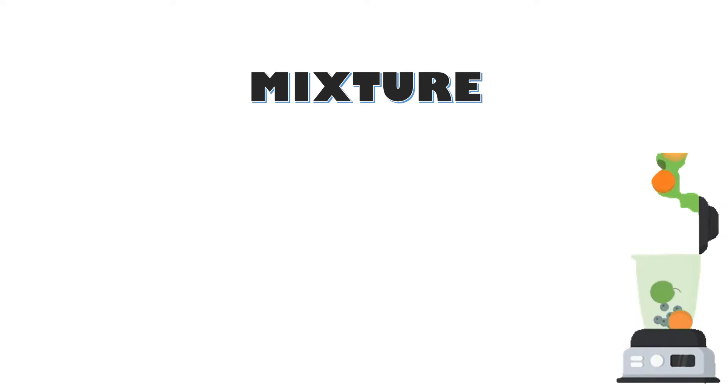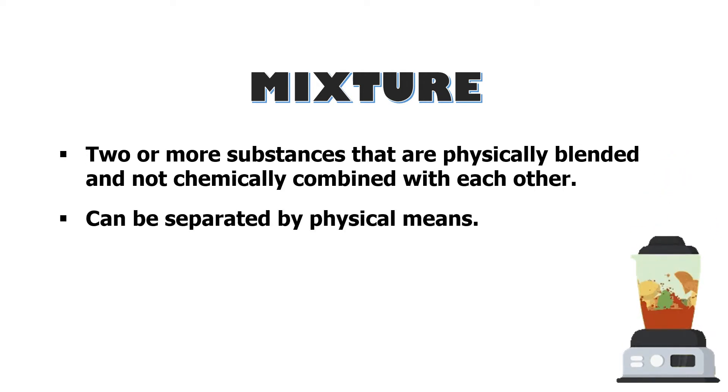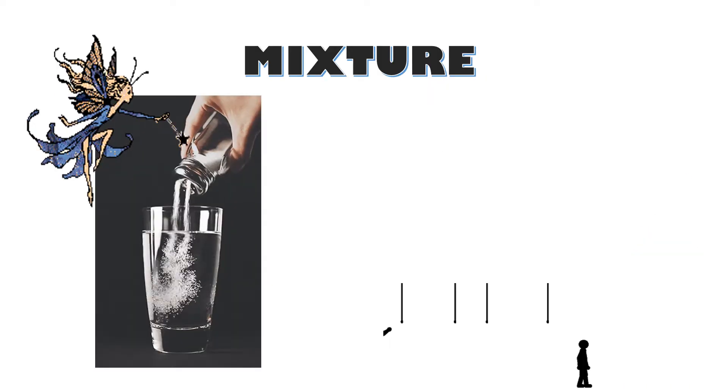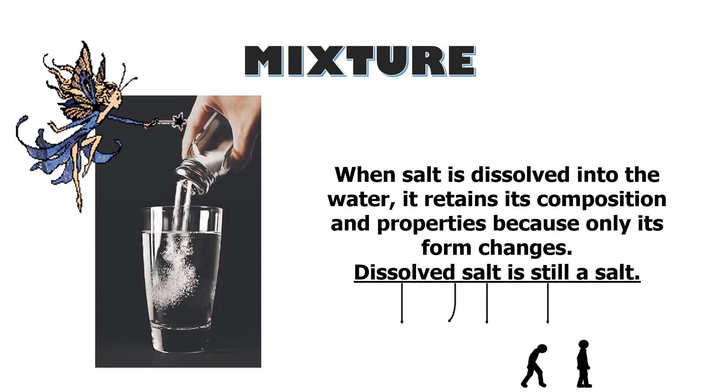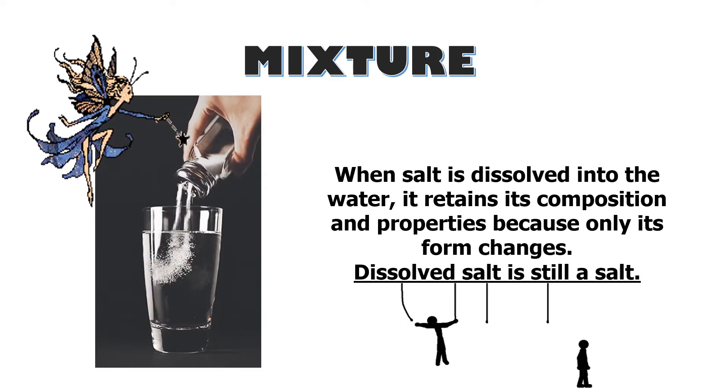Let us focus first on mixture. What is a mixture? Mixtures are combinations of two or more substances that are physically blended and not chemically combined with each other. That's why they can still be separated by physical means, and the substances in a mixture retain their individual properties. For example, when salt is dissolved into water, it retains its composition and properties because only its form changes. Dissolved salt is still salt.